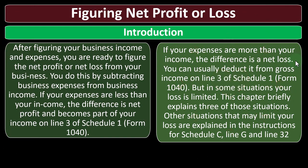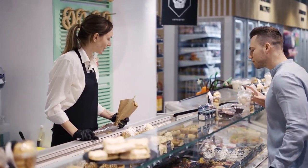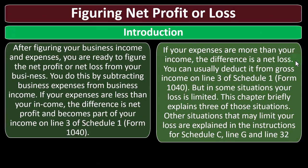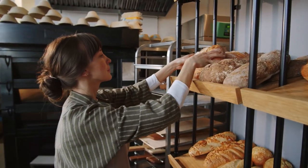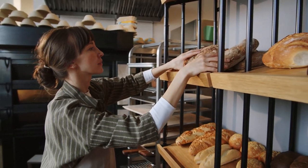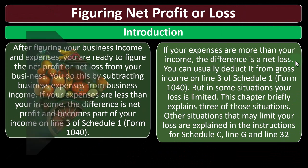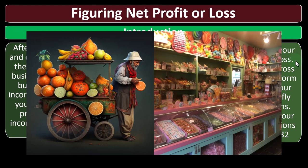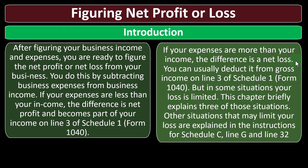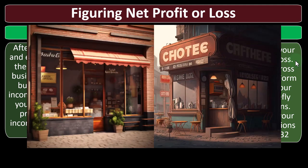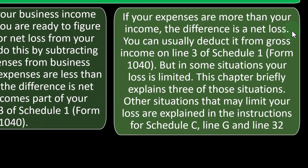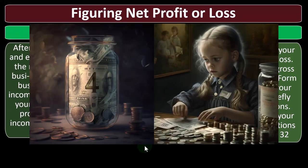We also talked about the situation of whether you have a business or a hobby. Just because you have a loss doesn't mean you're not necessarily a business, but if you have losses for an extended period of time, the IRS will be more skeptical, and you may have to prove that you have business intent — which means revenue generation intent. If it's not revenue-generating activity, you might have a hobby situation rather than a business. But if you are legitimately trying to build a business, it's quite common in the first couple of years to have a loss. You don't want to be overly worried, as long as you can prove in the event of an audit that you are actively seeking profit. You can usually deduct the loss from gross income on line three of Schedule 1, Form 1040, but in some situations your loss is limited.